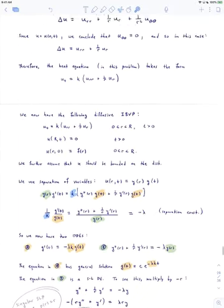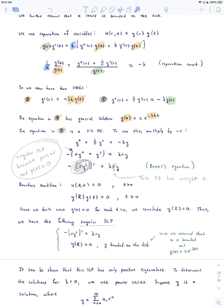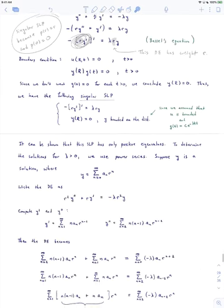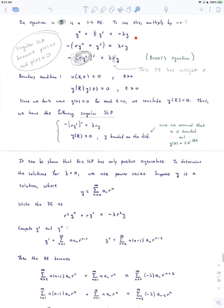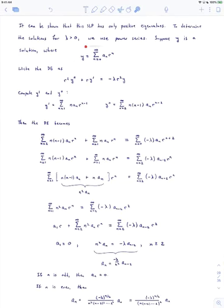We write the differential equation multiplied by r squared. Our original differential equation, multiplied by r squared, gives r squared times y double prime plus r times y prime — since r squared times 1 over r is just r — equals minus lambda times r squared y. We multiply by r squared just to make the computations easier; it makes everything look nicer in the end.